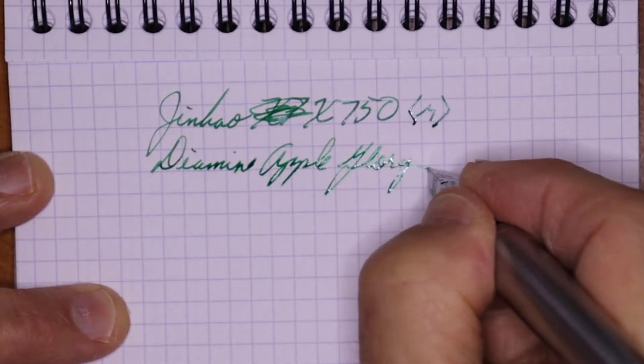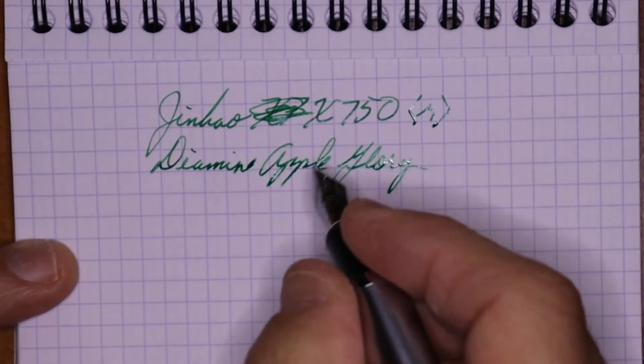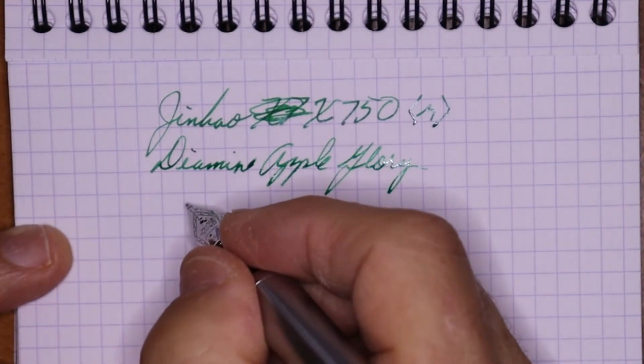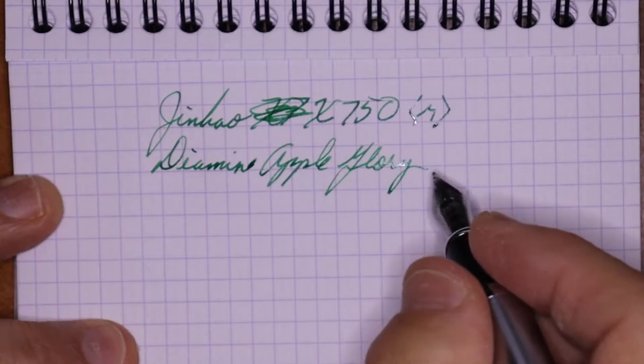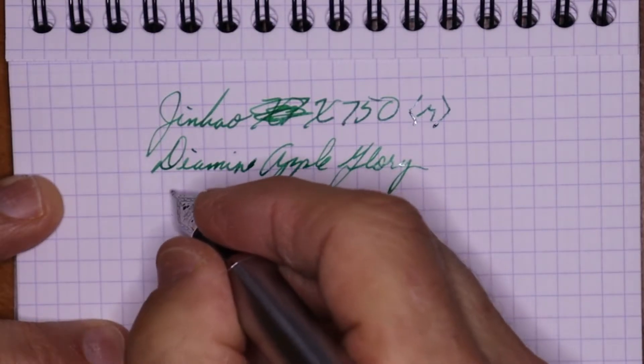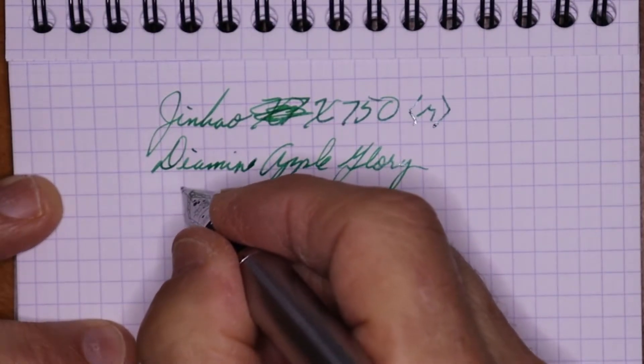And the ink I'm using is Diamine Apple Glory. I like that ink, it's good performing ink. It has a nice, as far as bright inks I tend to like more earth toned inks, but this Apple Glory is just something about it, I like it.